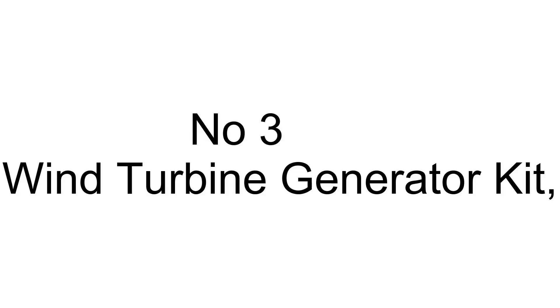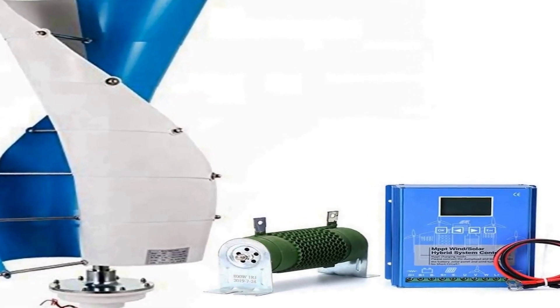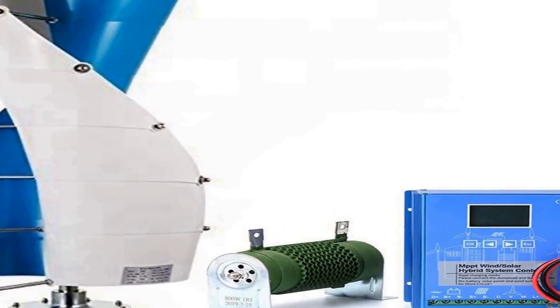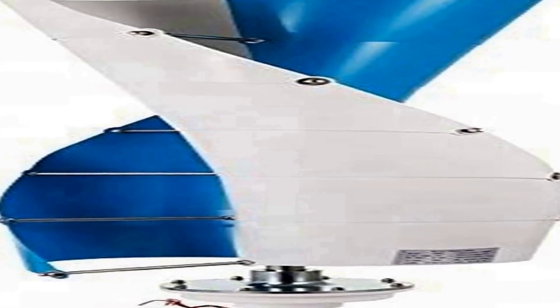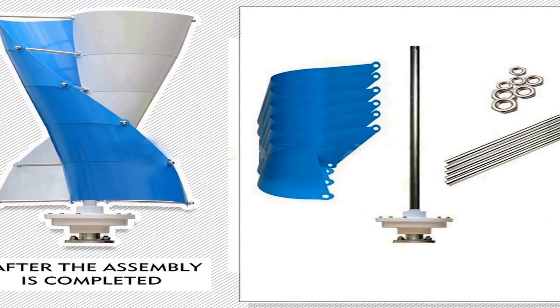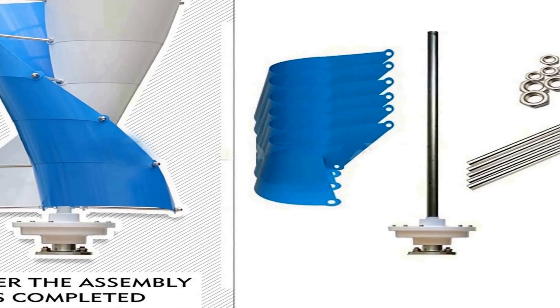The number 3 on the list is a Wind Turbine Generator Kit. Its blades feature a curved design that utilizes wind resources effectively and obtains higher power generation. Applications include marine, boat, street lights, home, plaza lighting, and more.